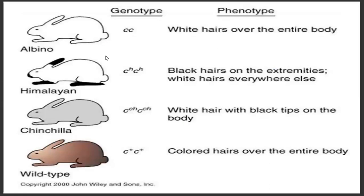Here you can see the different phenotypes with regard to coat color in rabbit. First is the albino, in which white hairs are present over the entire body. The second is the Himalayan, in which black hairs are present on the extremities while white hairs are present everywhere else. Next is the chinchilla, which has white hair with black tips, while the wild type has colored hairs over the entire body.